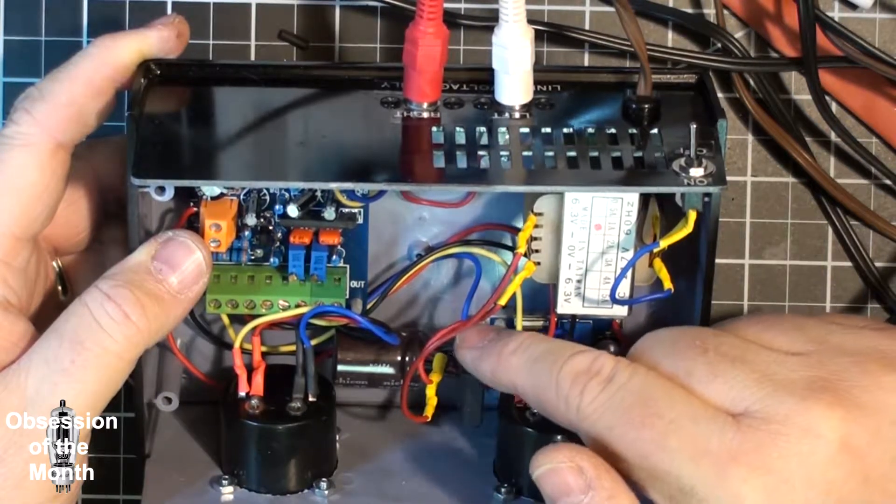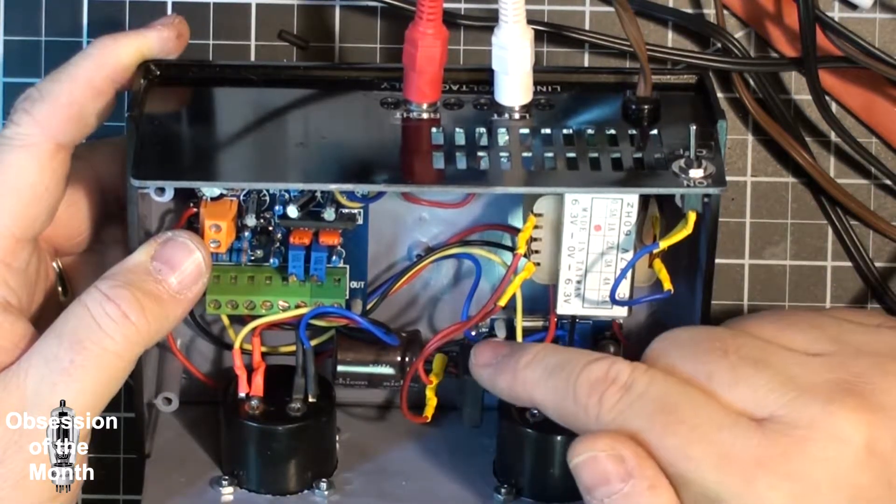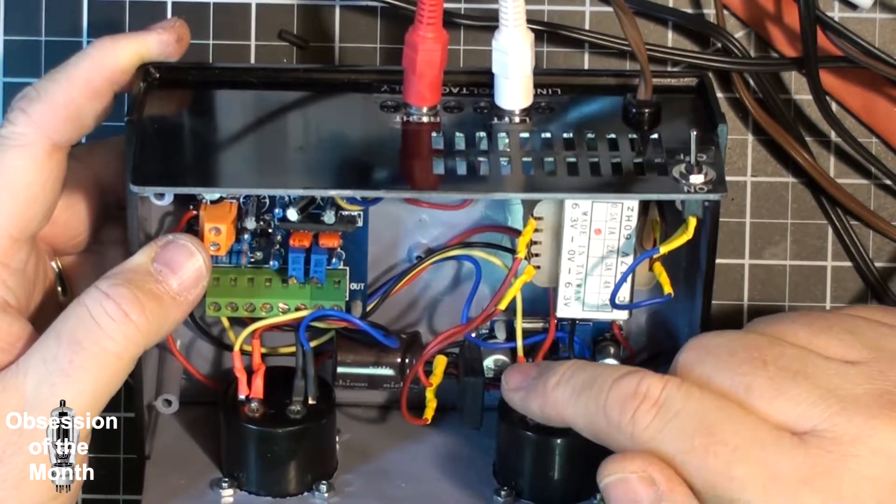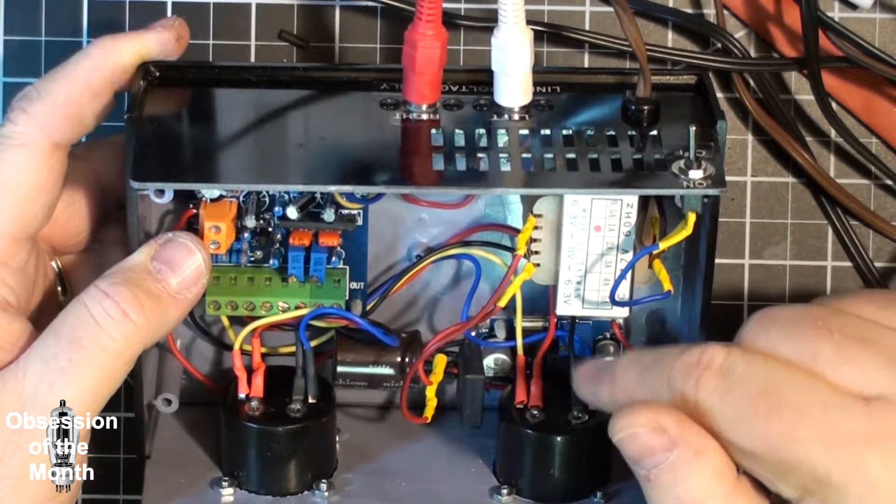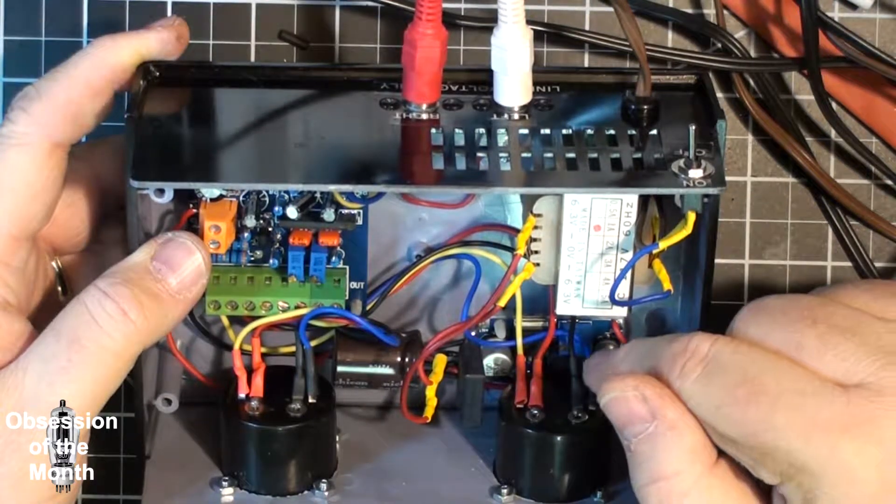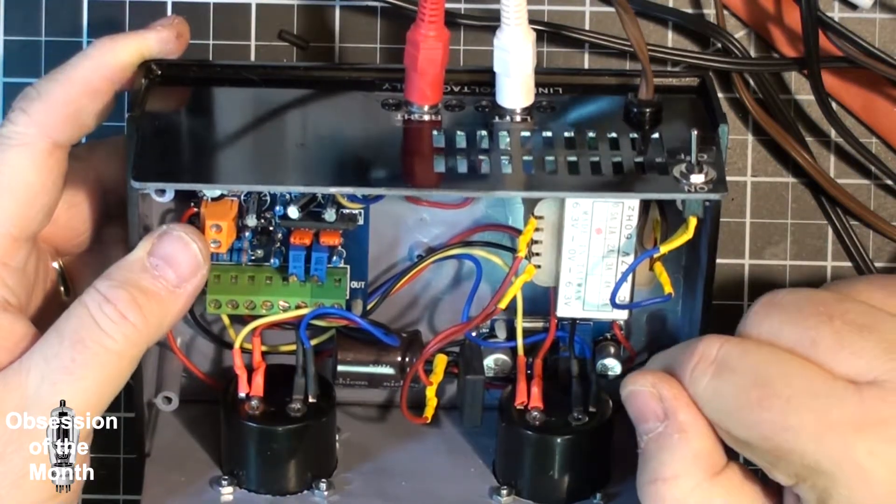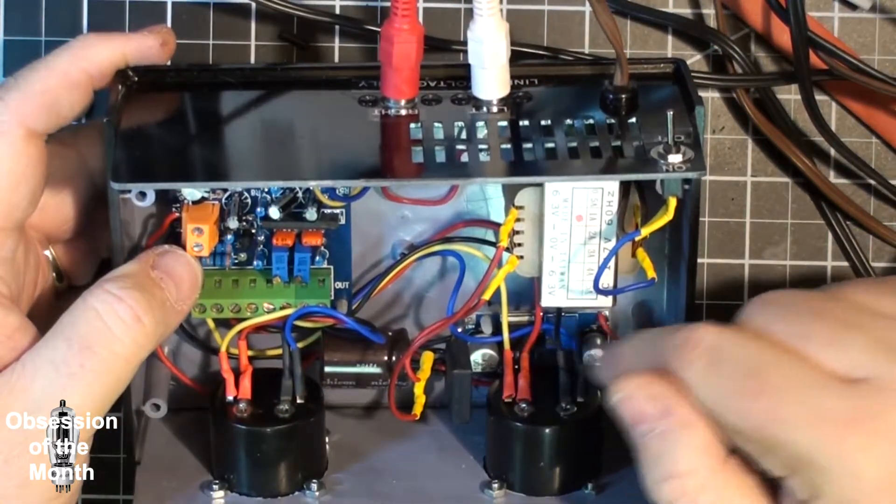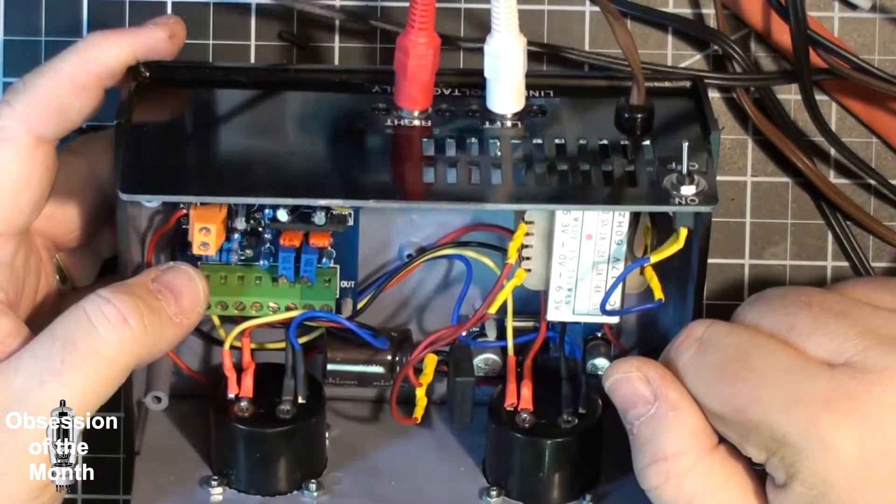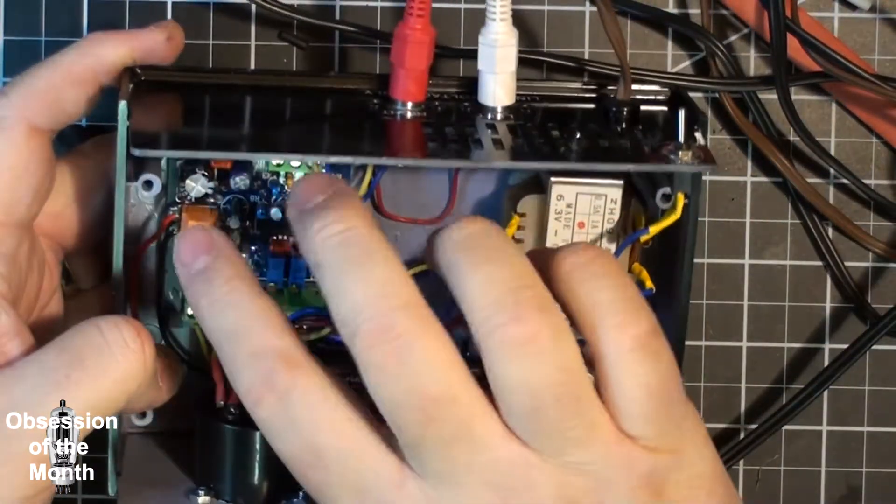Once I got it connected I hooked up a multimeter to it and adjusted this little potentiometer until I got exactly 12 volts. 12 volts comes over to the voltage input on this board.